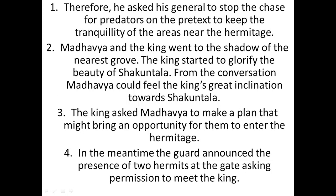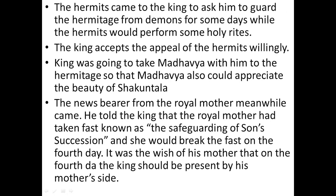The King asked Madhya to make a plan to bring an opportunity for them to enter the hermitage. In the meantime, while they were discussing plans, the guard announced the presence of two hermits at the gate, asking permission to meet the King. The hermits came to ask the King to guard the hermitage from attacks of demons for some days while they performed sacred holy rites. They were afraid that demons would attack and disturb their holy rites. So they asked the King to guard them. The King took this opportunity to enter the hermitage to see Sakuntala, and willingly accepted the appeal.